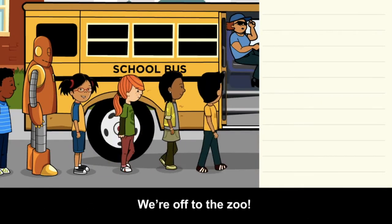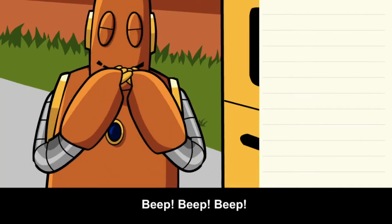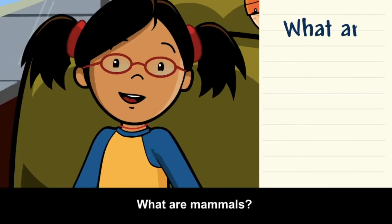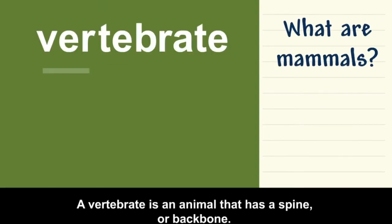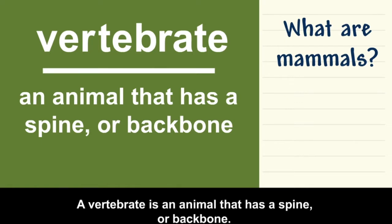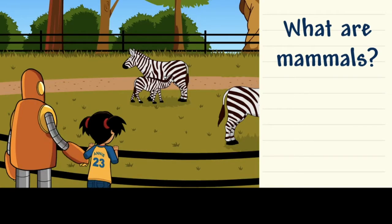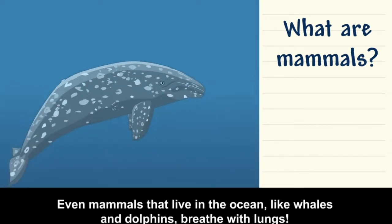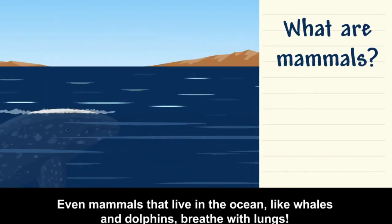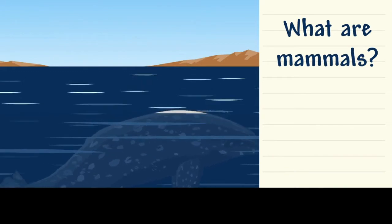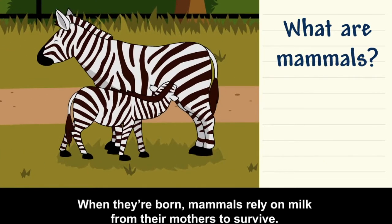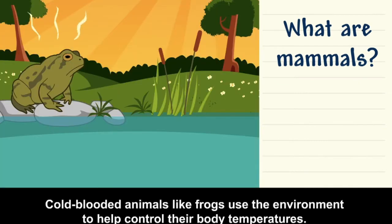We're off to the zoo! I can't wait to see the elephants — they're the largest mammals that live on land. What are mammals? A vertebrate is an animal that has a spine or backbone. All mammals are vertebrates. All mammals use lungs to breathe oxygen. Even mammals that live in the ocean, like whales and dolphins, breathe with lungs. Very young mammals get help from adults for protection and food. When they're born, mammals rely on milk from their mothers to survive.